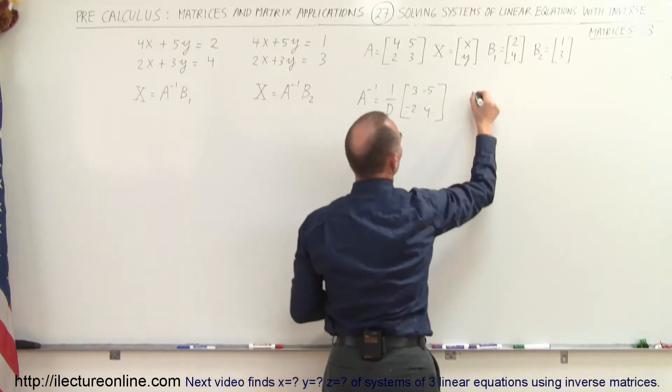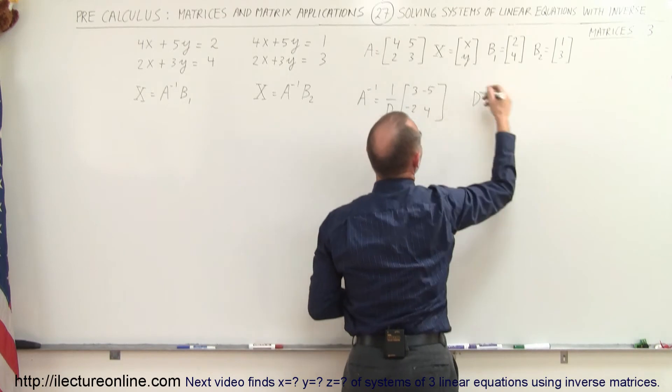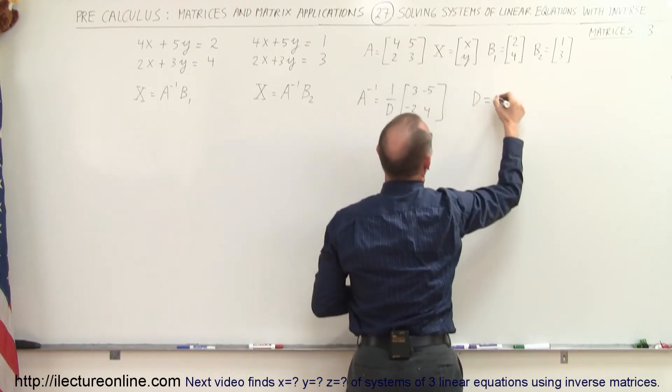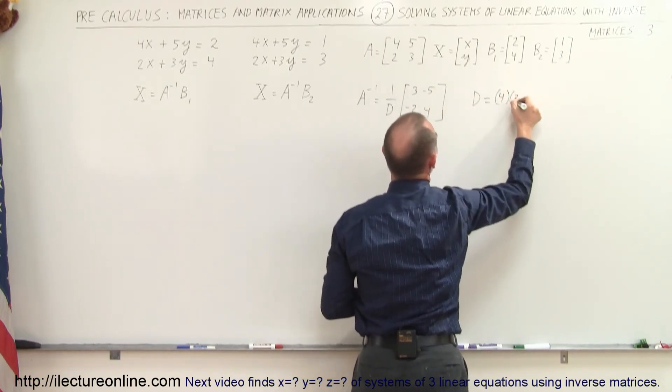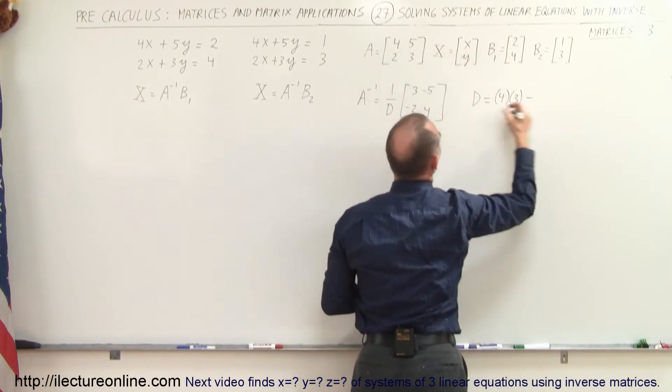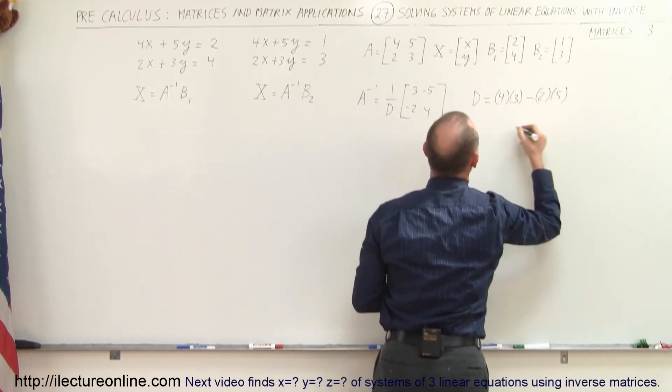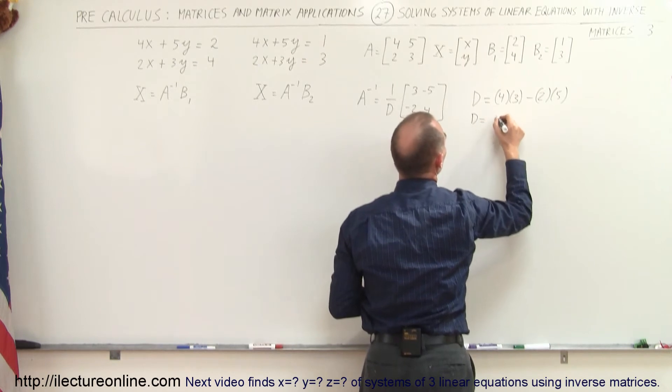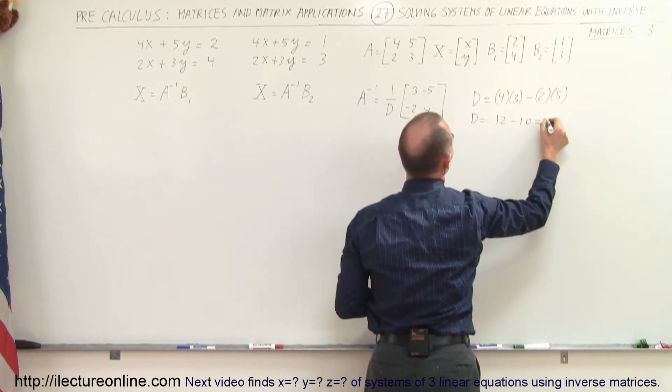And of course the determinant is equal to the diagonal numbers 4 and 3 multiplied together minus the diagonal numbers 2 and 5 multiplied together. So that means that D is therefore equal to 12 minus 10 which is equal to 2.